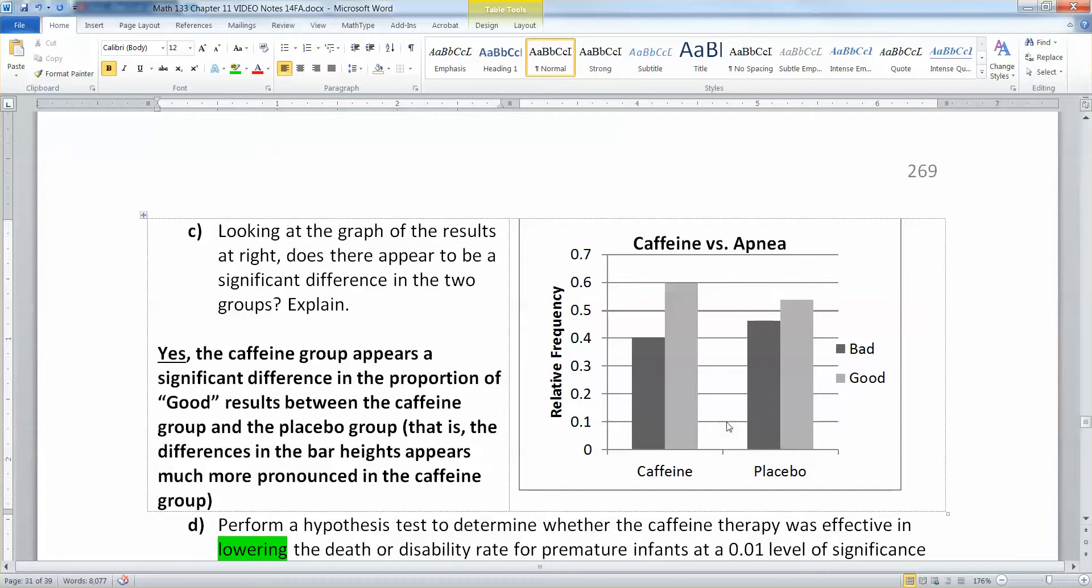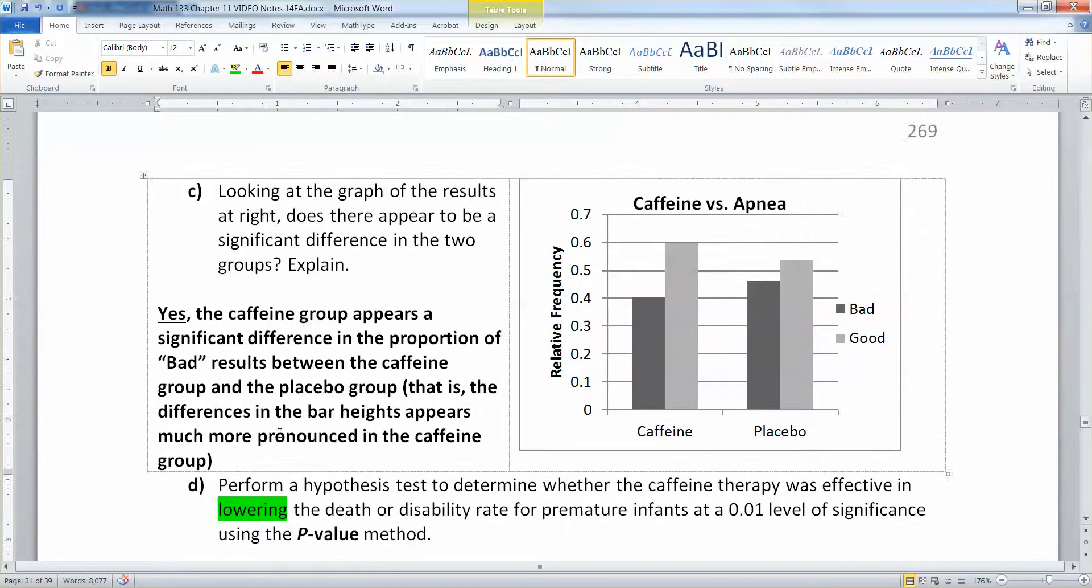In other words, the proportion of good results in the caffeine group appears to be a significantly different proportion than the proportion of good results over here or vice versa. The proportion of bad results appears to be very different. So there's a more pronounced, more marked difference over here on the caffeine group than there is the placebo group.